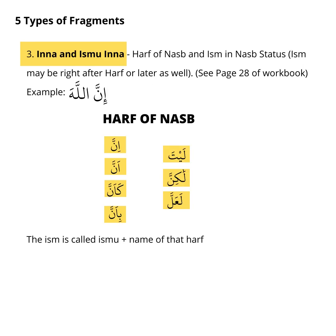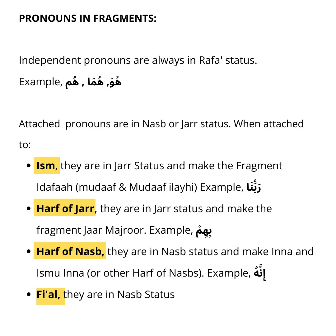The third fragment is Inna and Ismu Inna, which is the Harf of Nasab followed by an ism in Nasab status. It can be right after the ism, the harf, or later as well. The ism is called Ismu Anna, or Ismu Bi Anna, or Ismu Lakinna, depending on the harf. Independent pronouns are always in Rafa status. Attached pronouns could be in Nasab or Jar status — if attached to an ism or a Harf of Jar, they are in Jar status, and if attached to a Harf of Nasab or a Fi'al, then the pronouns are in Nasab status.